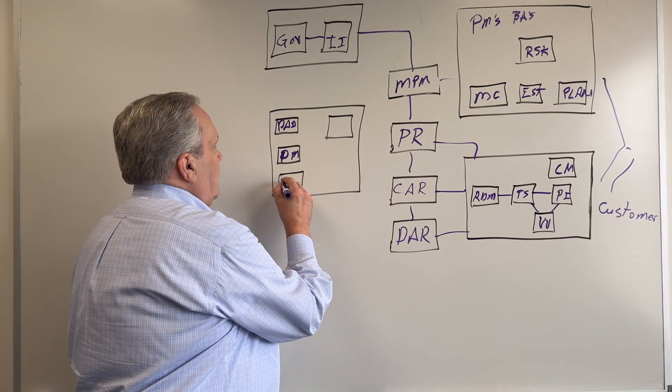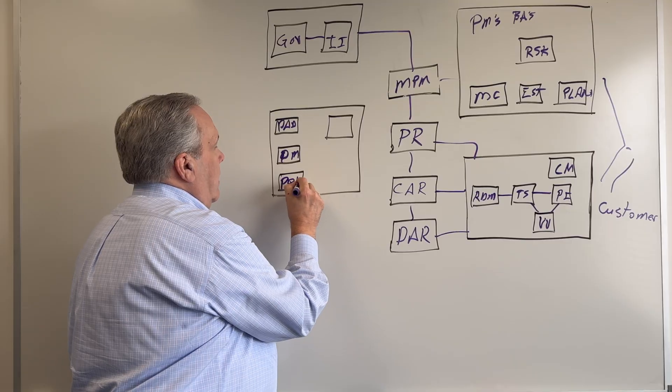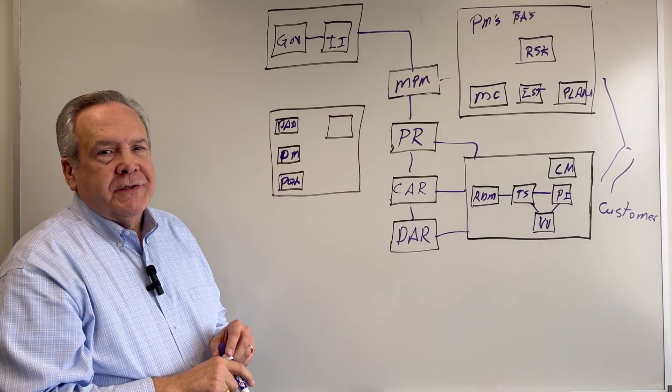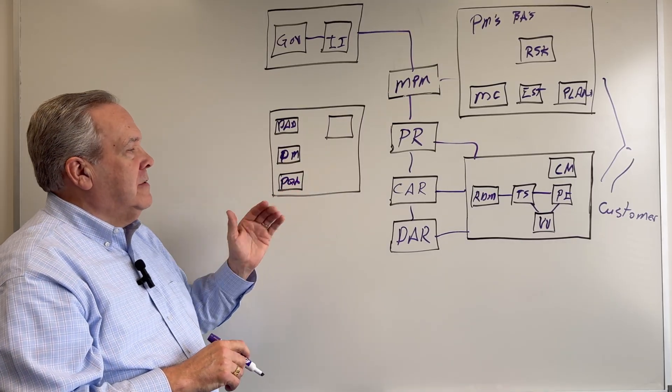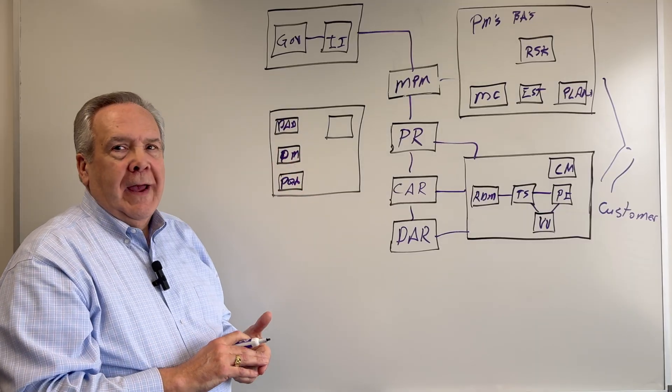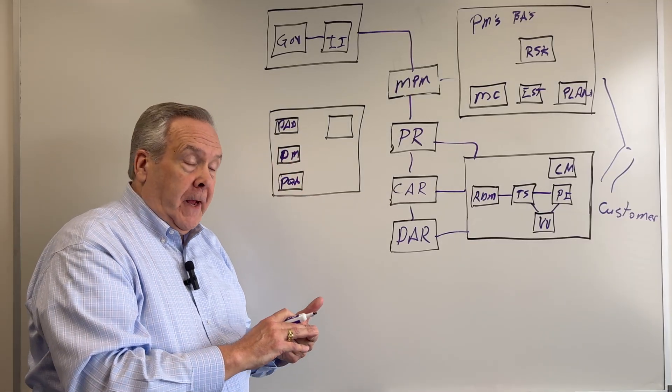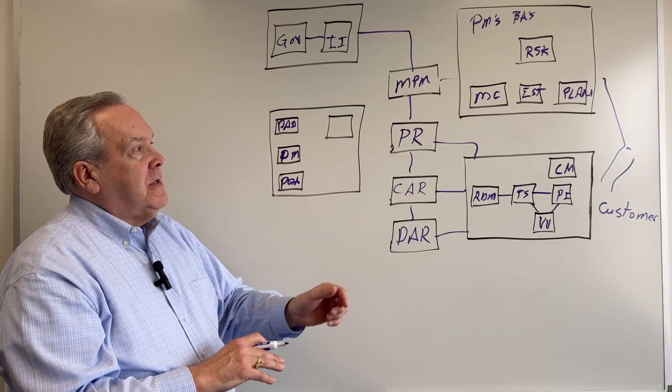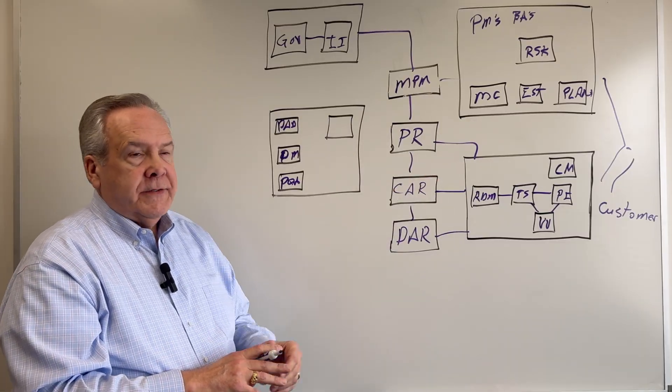And then the last one in this area is process quality assurance. So from the process quality assurance side, we're making sure that what we're putting out meets the performance of the practice area and also meets the performance of the process improvement areas.